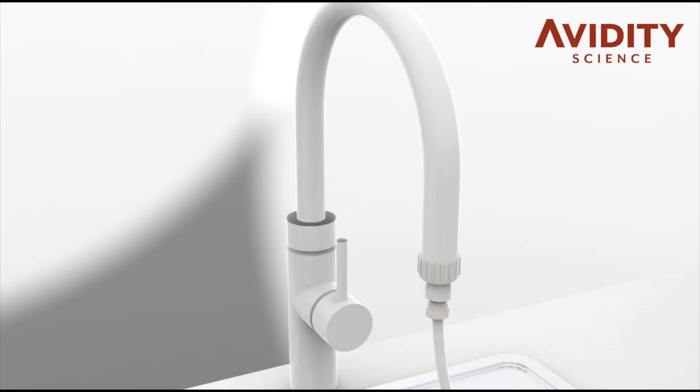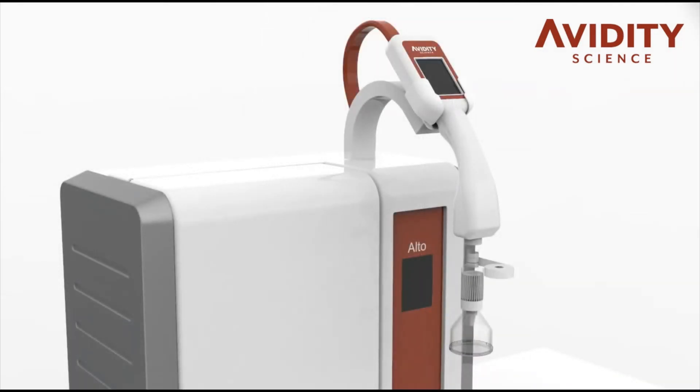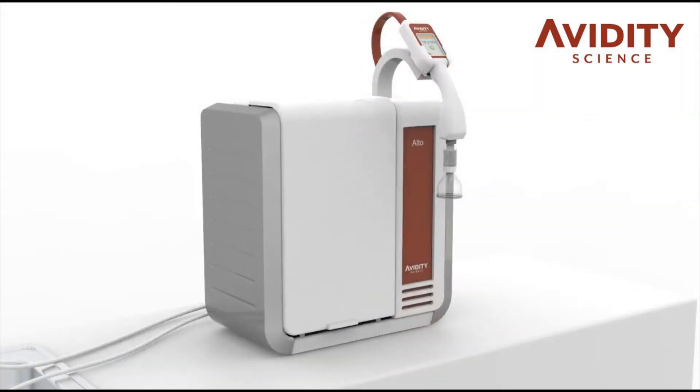To install the point of use filter, first wrap four to five turns of the PTFE tape provided around the thread and then screw into the dispense valve.